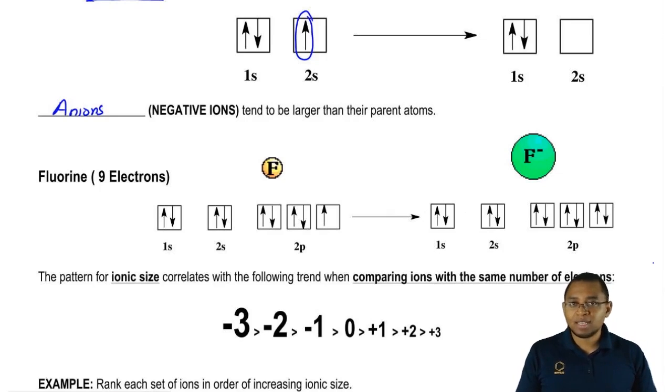They're times 10 to the negative 31 kilograms, but every little bit counts. As a result, you'd expect F minus to be bigger than neutral F.